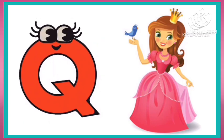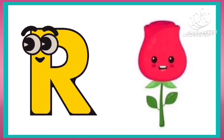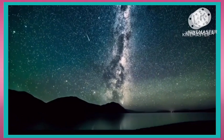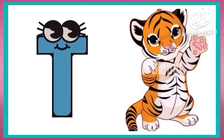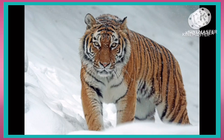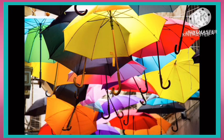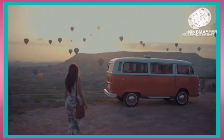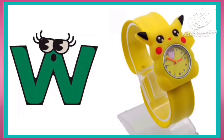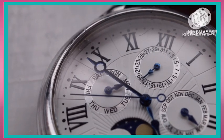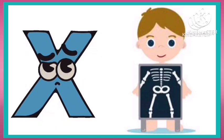Q is for Green. R is for Rose. S is for Star. U is for Umbrella. X-Ray.